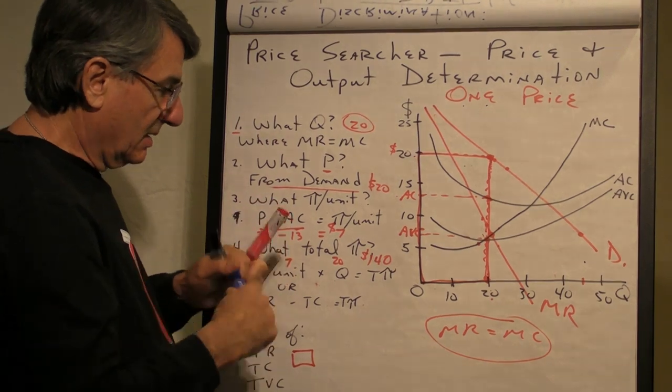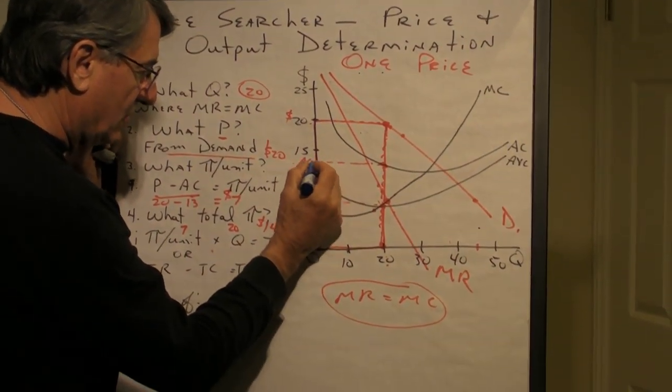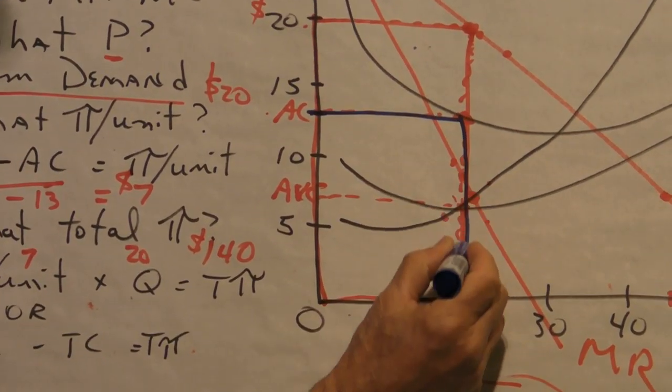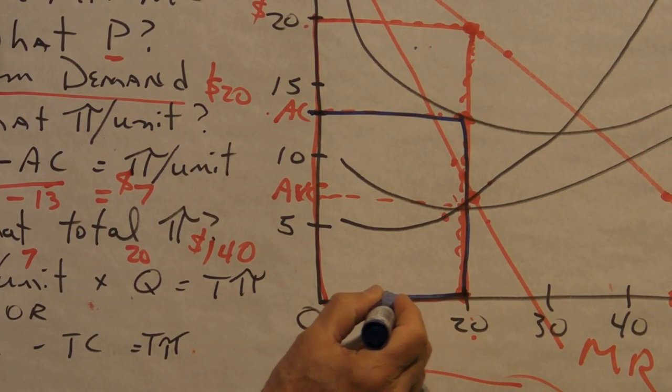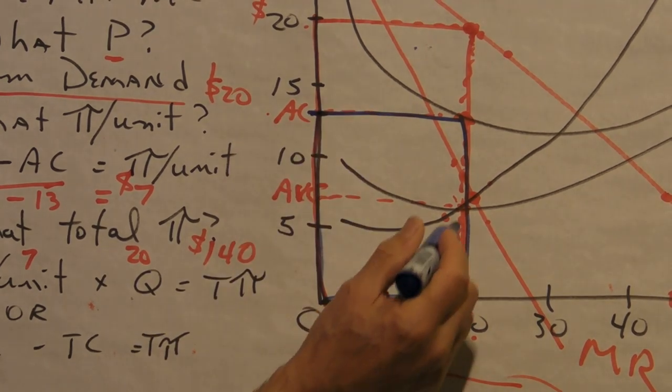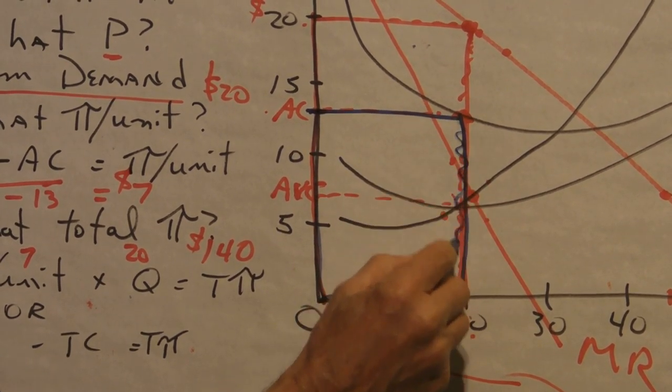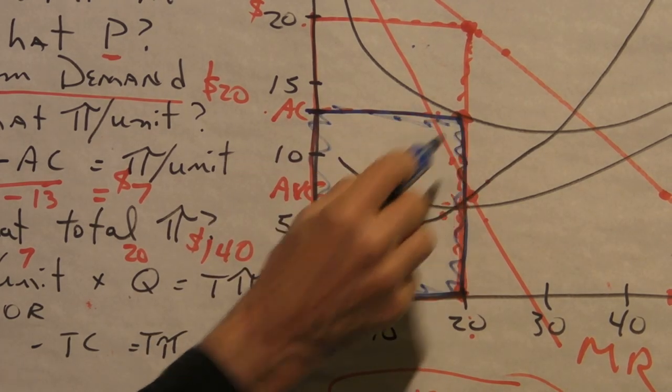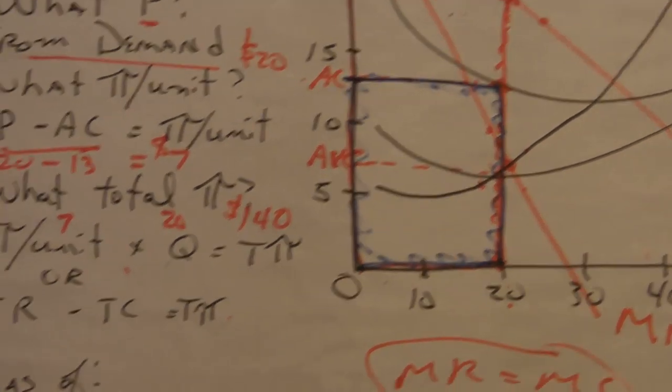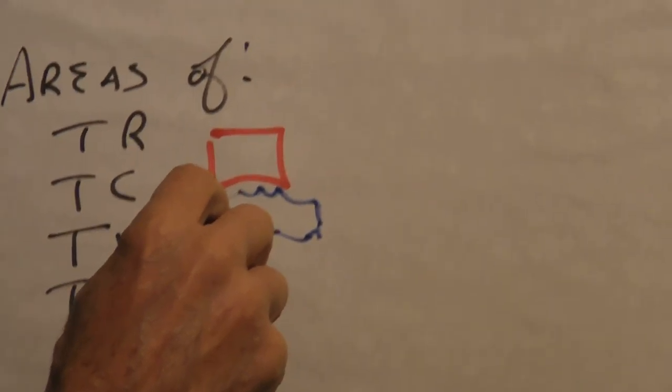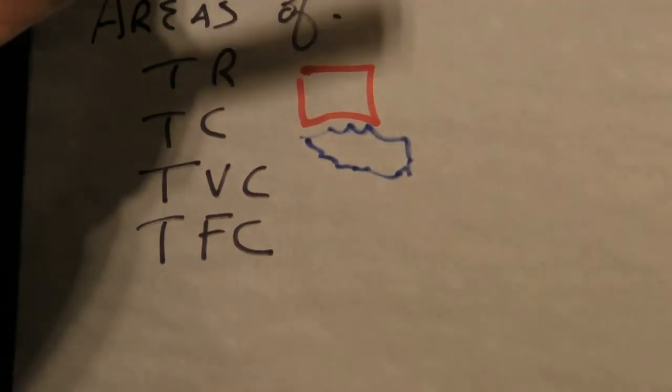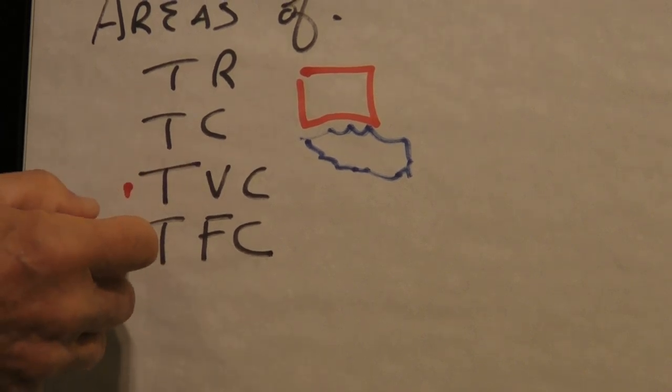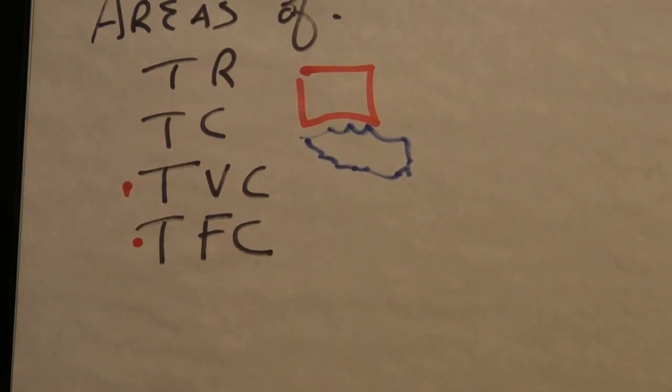Total cost, the average cost of producing each one of these is about $13 here, so this blue rectangle is $13 by $20. So, this blue rectangle represents total—can you help me here—total cost. Total cost. Now, we know the total cost is made up of total fixed costs and total variable costs.